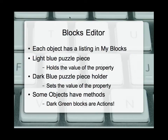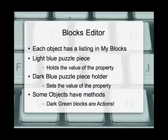We've been using the blocks editor for a week now. In the blocks editor, every instance of the object we have is listed on the left. Inside each block's submenu, we have a couple different sections. The light blue puzzle pieces hold the value for a property — they are the answer or result stored in that property. The dark blue puzzle pieces are the ones we plug in to change the values. And the dark green blocks are the actions that that object can perform.